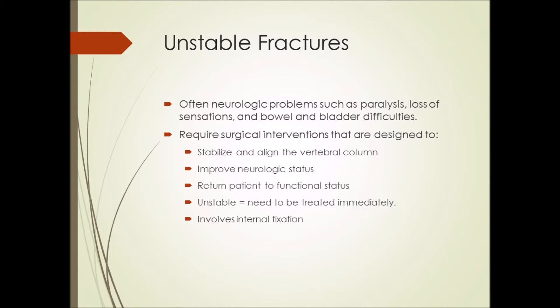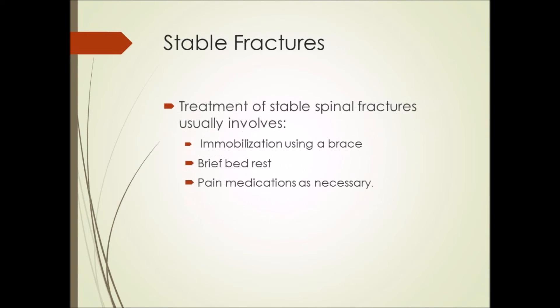Fractures that leave the spine unstable often include neurological problems such as paralysis, loss of sensation, and bowel and bladder difficulties. Unstable spinal fractures need to be treated immediately. These fractures almost always require surgical interventions designed to stabilize and align the vertebral column, improve neurological status, and return the patient to functional status as soon as possible, usually involving internal fixation for accurate reduction, immediate stability, and early mobilization. The treatment of stable spinal fractures usually involves immobilization using a brace with brief bed rest and pain medication administered as necessary.